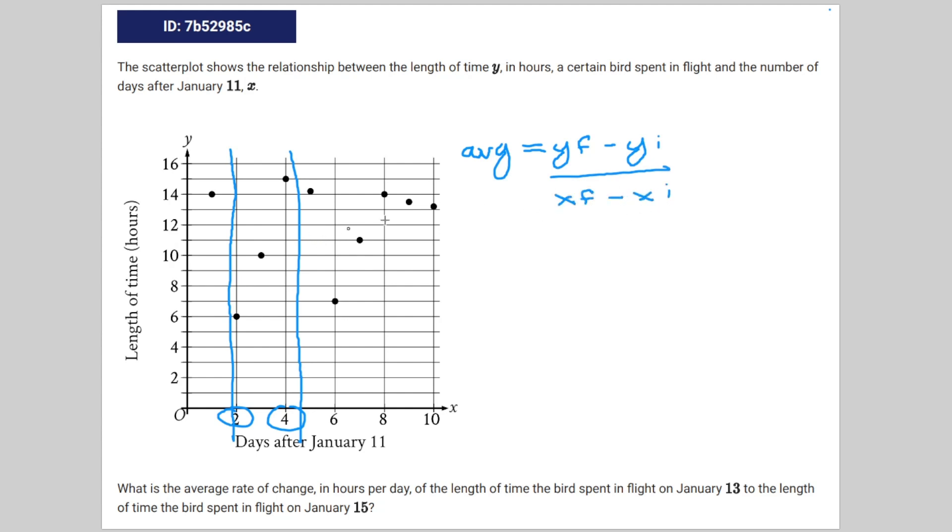And this situation is going to be 15 minus 6 over 4 minus 2, of course, and that's going to be equal to 9 divided by 2, which is equal to 4.5. Therefore, 4.5 is the correct answer.